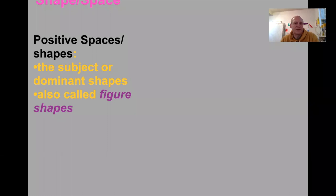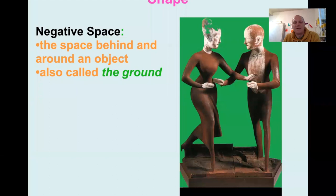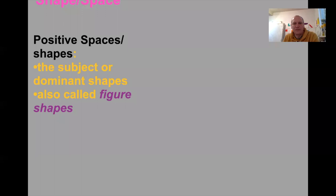We've got to start talking about shape and space together. We've got positive space and shape — that's where the subject or dominant shapes are, also called figure shapes. Looking at the sculpture, we understand that the figures are shapes; they are positive shapes, taking up space. And then we've got negative space shapes — all of the space and shape happening behind the object, also called the ground. This gives us the figure-ground relationship.